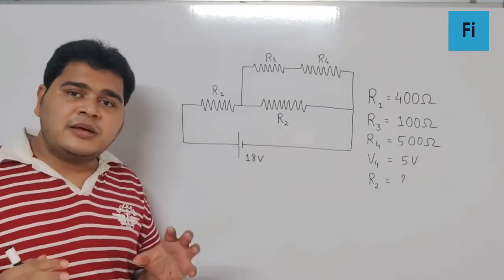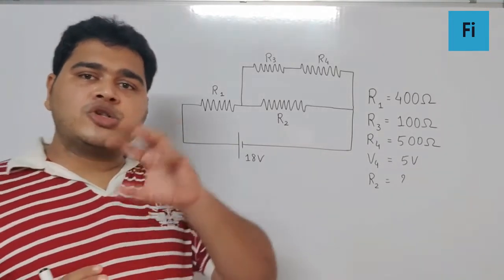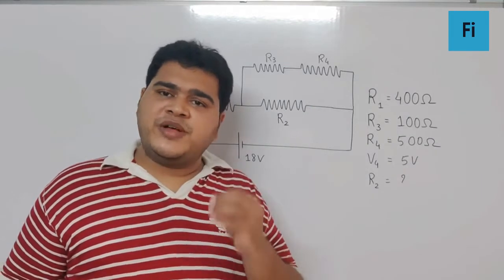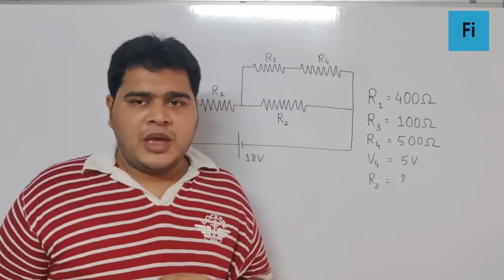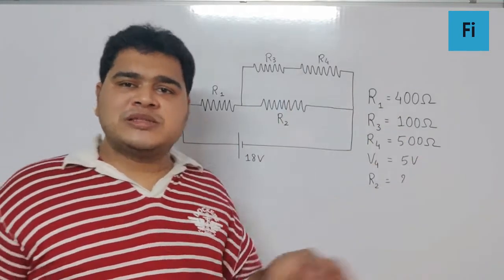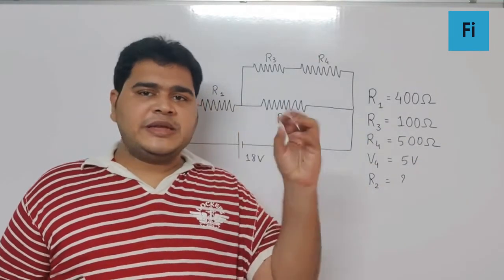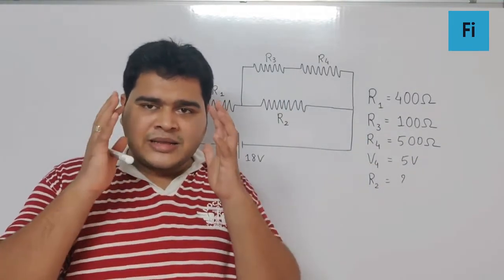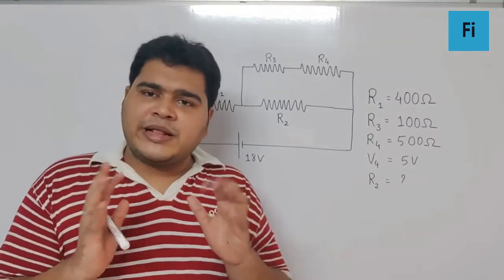So first thing, let's name the voltage across all four resistances as V1, V2, V3, and V4. And similarly, the current passing through all the resistances as I1, I2, I3, and I4. So our naming is quite clear.